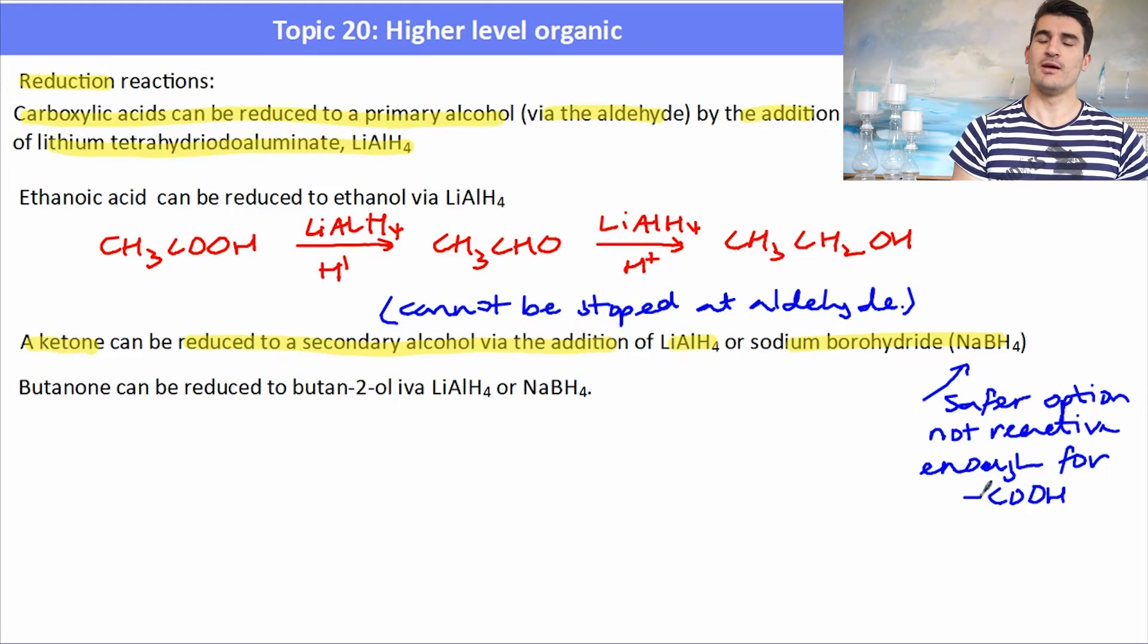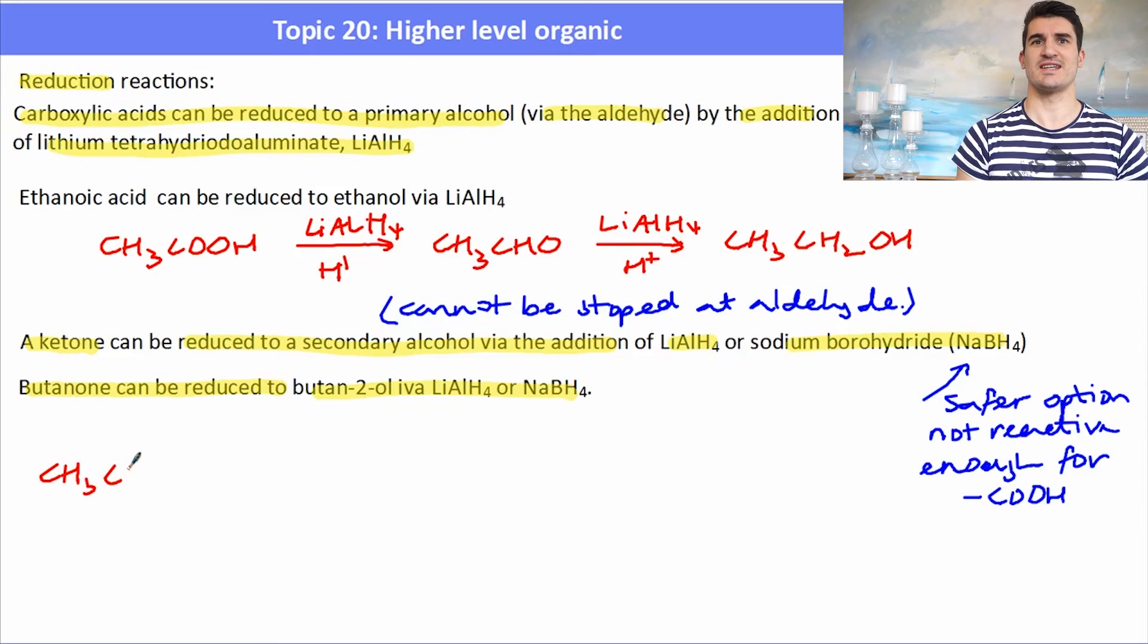Butanone can be reduced to butan-2-ol via either of these two chemicals, but we would choose to use the sodium borohydride because it is a safer chemical and we want to keep our green chemistry in mind. Butanone has a formula CH3CH2COCH3, and we add that with our NaBH4 under acidic conditions again, and then we can form the secondary alcohol which would be butan-2-ol.